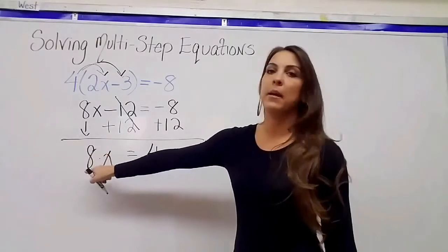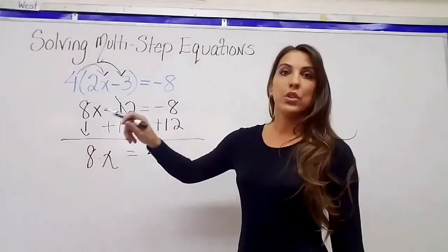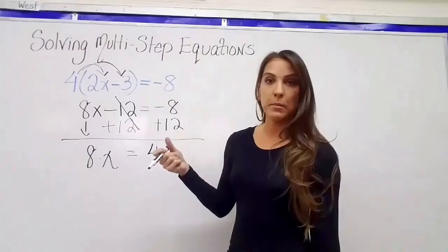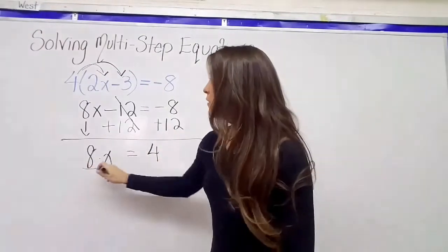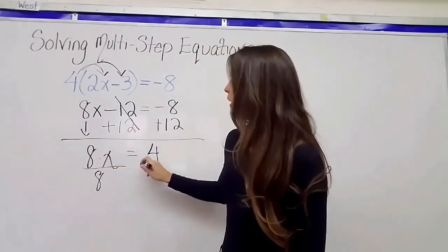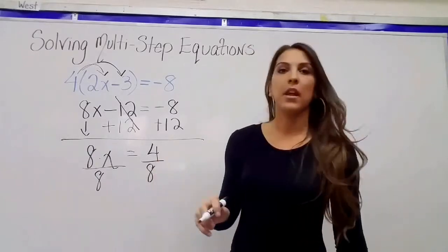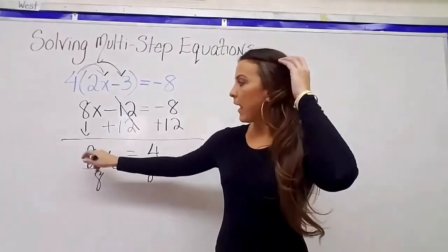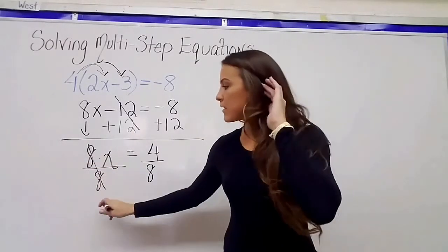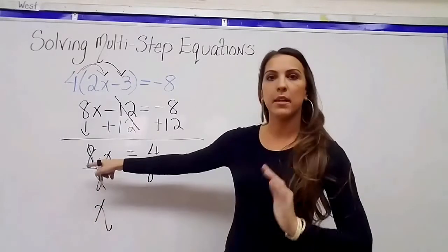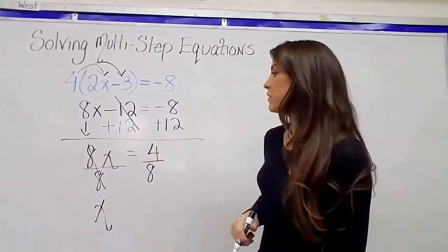Right now, x is being multiplied by the 8, by the coefficient. So if we want to do the inverse of multiplying, it's dividing. So we're going to divide both sides of this equation by 8. So on the left side, 8 divided by 8 is 1, and 1 times x is x, which makes sense because we're trying to cancel out by doing the inverse.